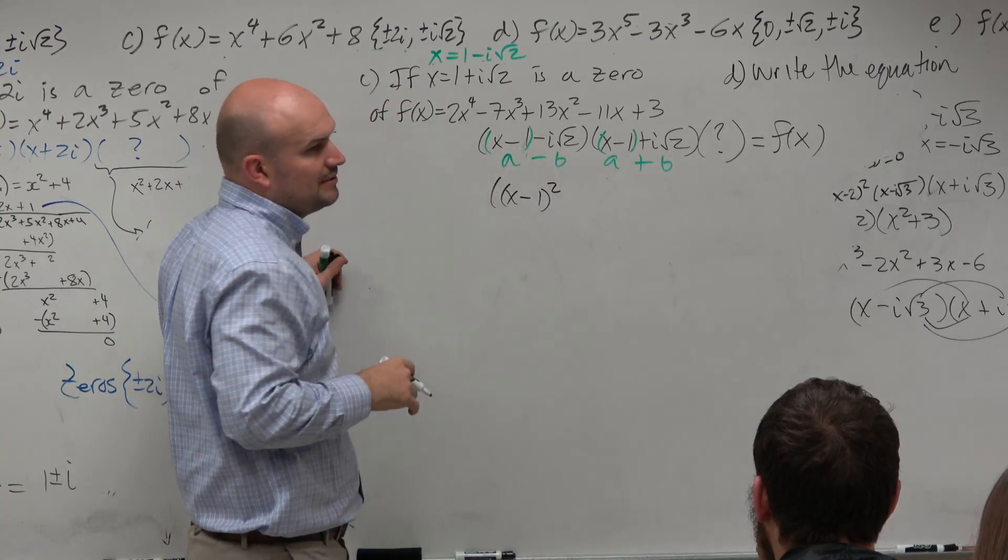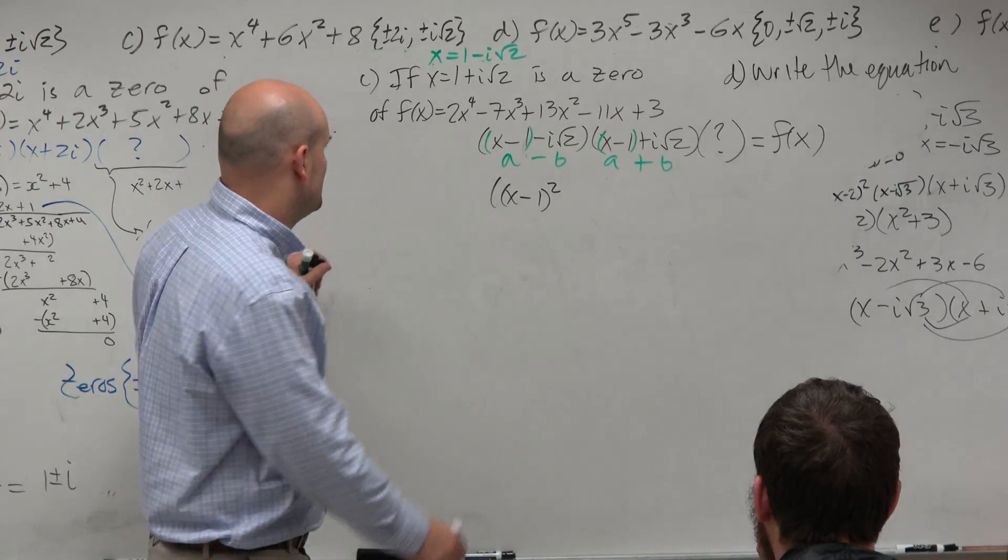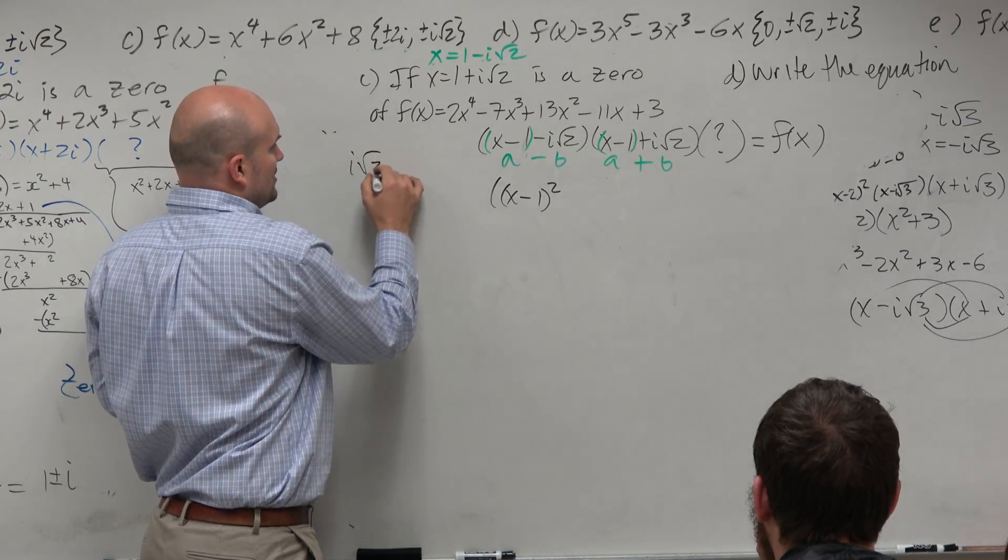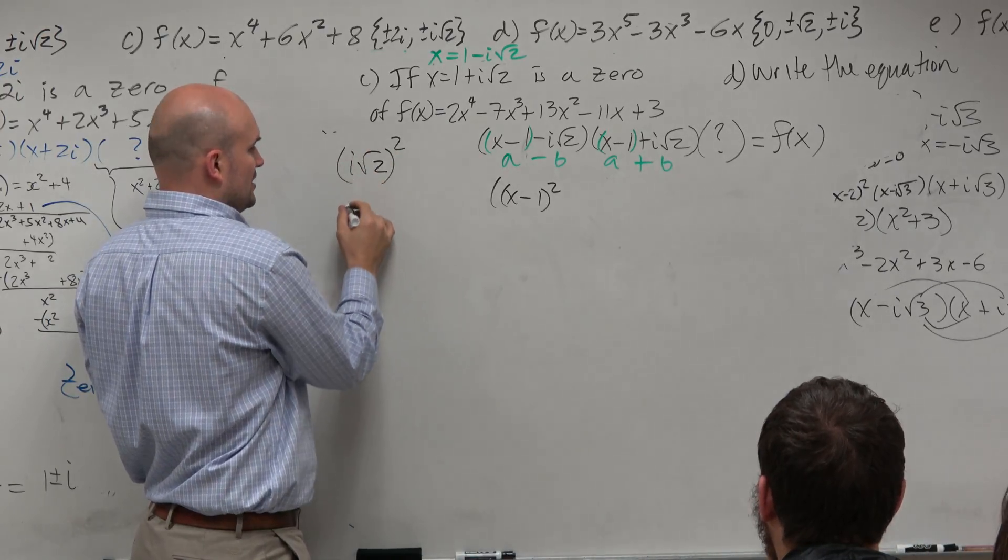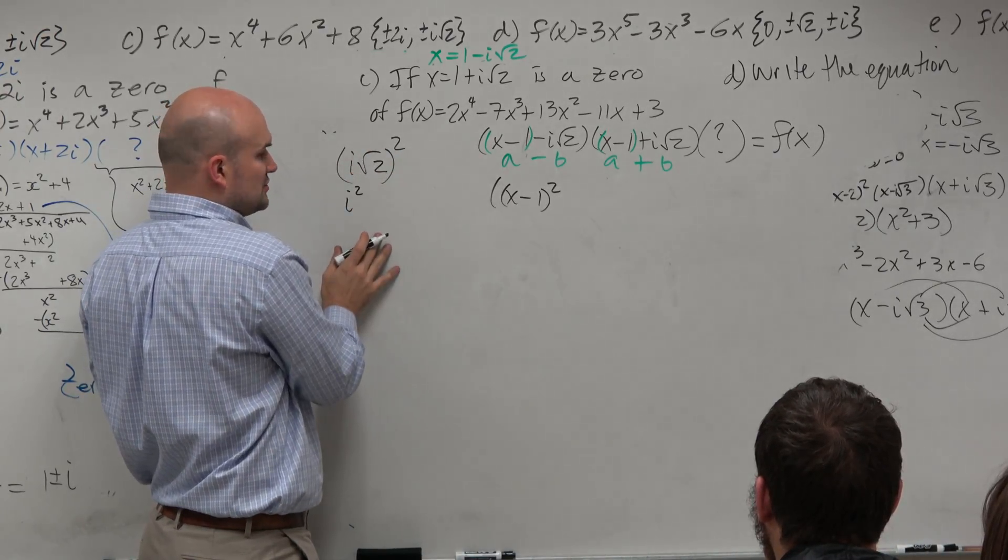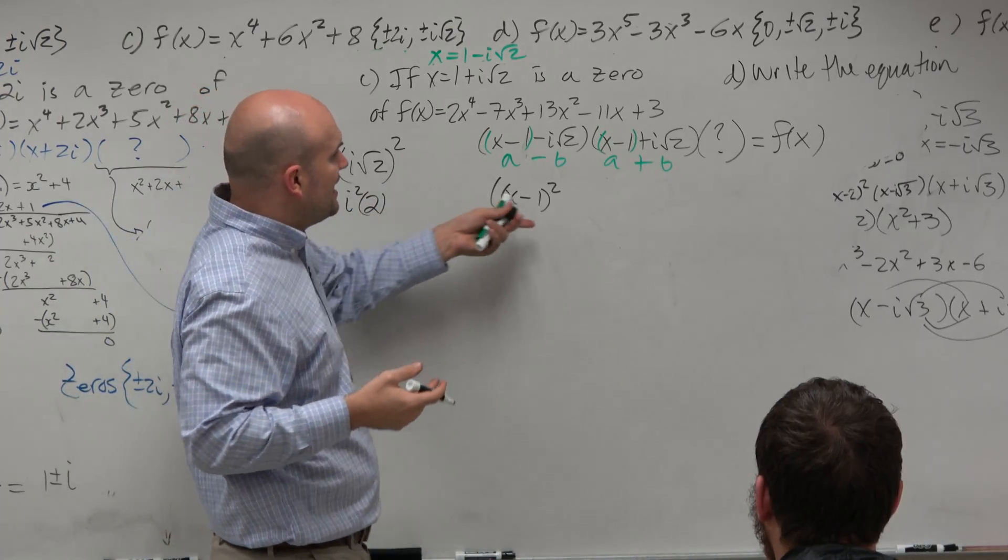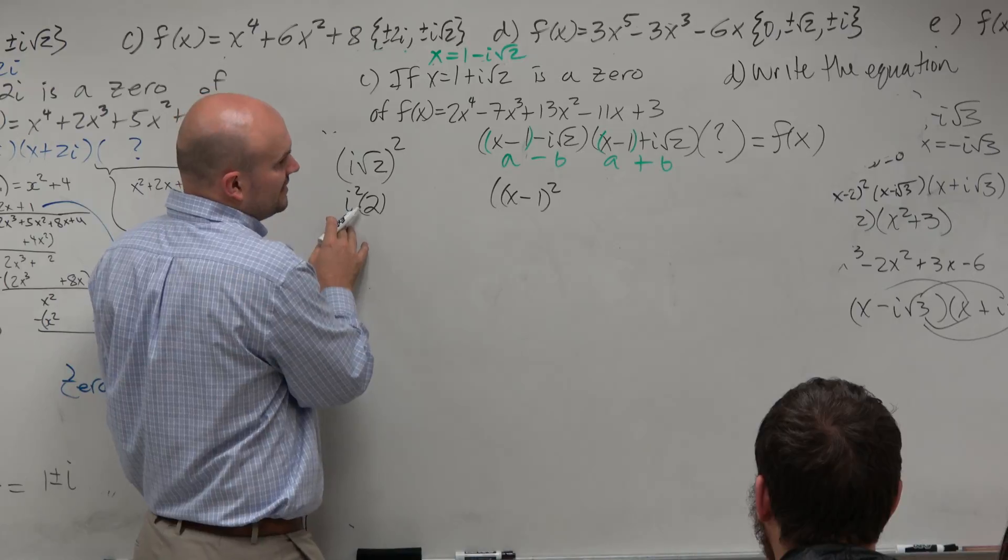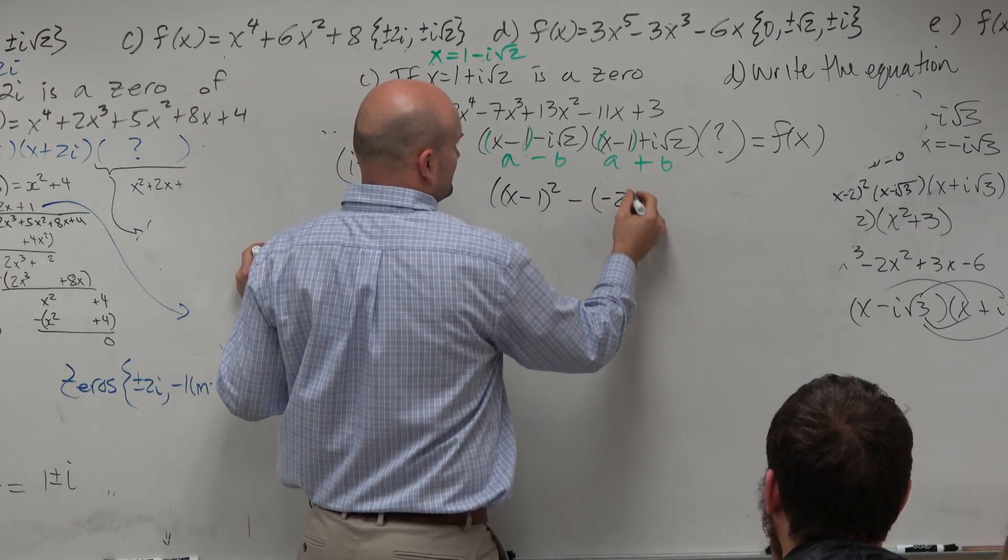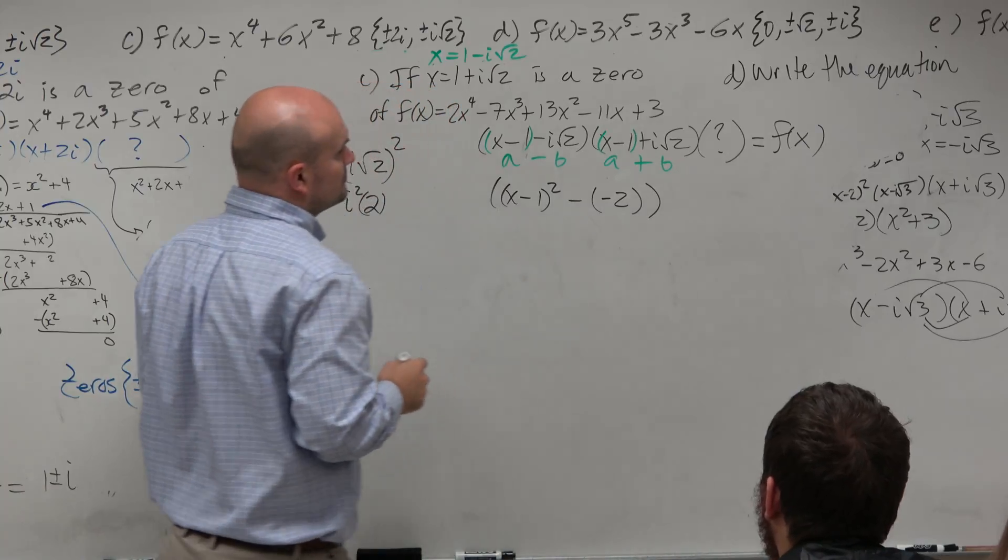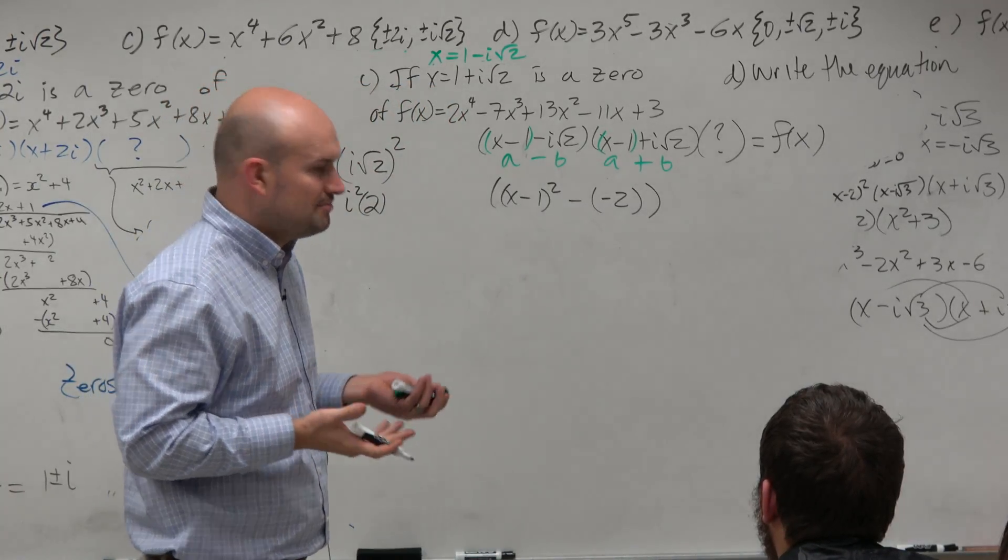Now, here, you've got to be able to determine what is i square root of 2 squared. So basically, you have i square root of 2 squared. Well, i squared is i squared. Square root of 2 squared is 2. i squared is negative 1. So you have the, so it's minus negative 2, which is really essentially the same thing as plus 2.